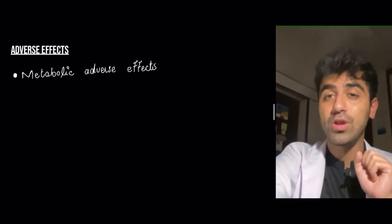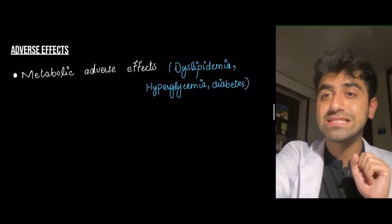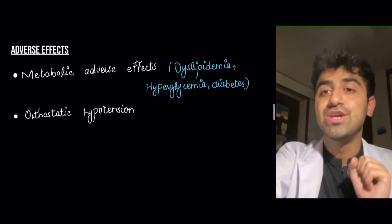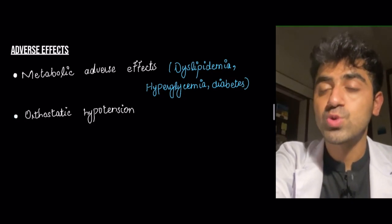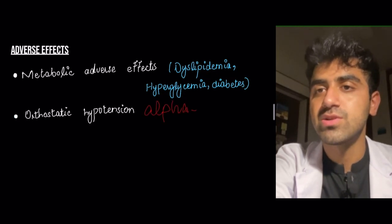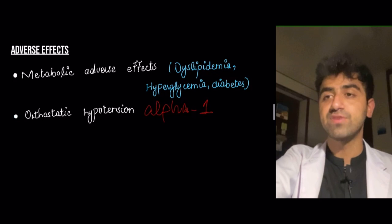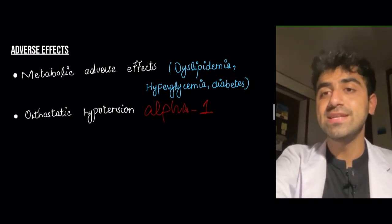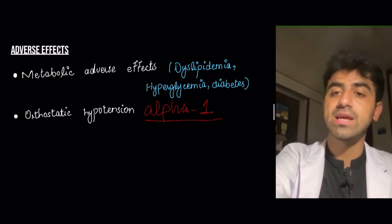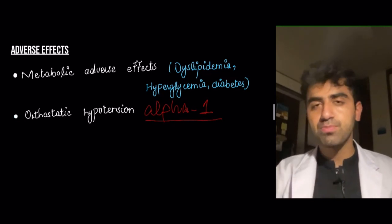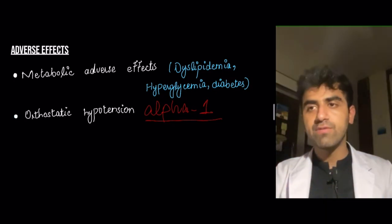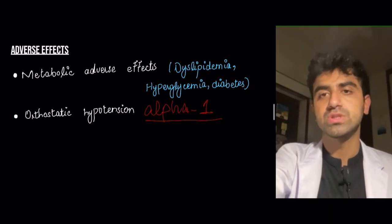Adverse effects of second generation antipsychotics include very prominent metabolic effects like dyslipidemia, hyperglycemia, and diabetes. They also cause orthostatic hypotension because they antagonize alpha-1 adrenergic receptors responsible for vasoconstriction. Blocking these receptors predisposes patients to orthostatic hypotension — when the person stands up they feel dizzy and like a curtain drawing down in front of their eyes.